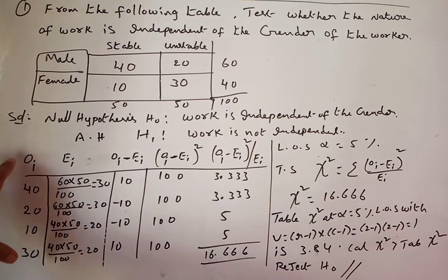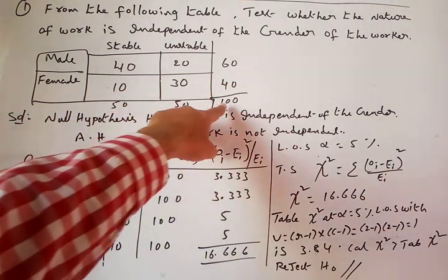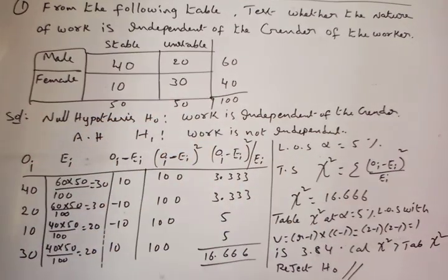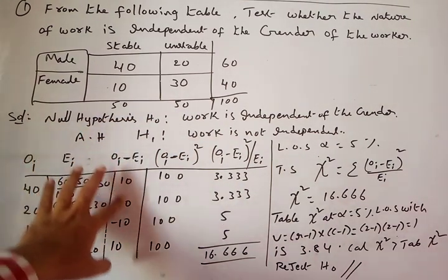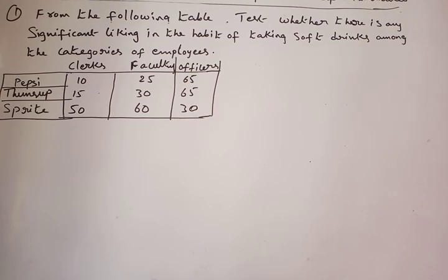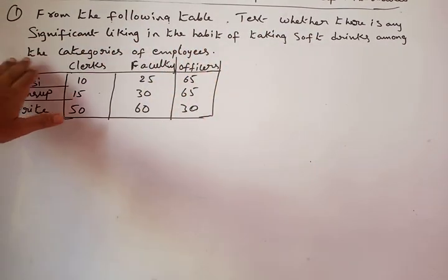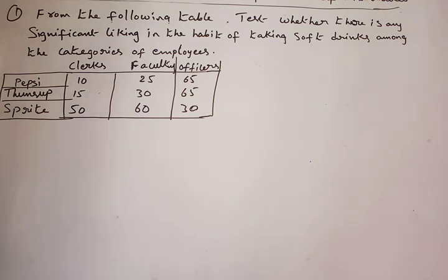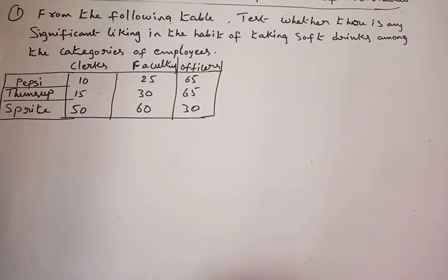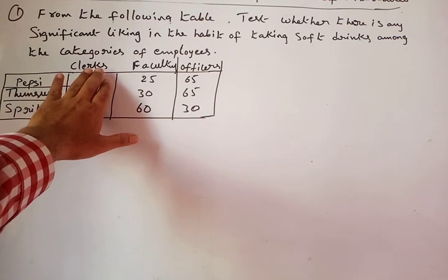The important part is calculation of expected frequencies: row total × column total / grand total. Next problem: From the following table, test whether there is any significant liking in the habit of taking soft drinks among the categories of employees — clerks, faculty, and officers.